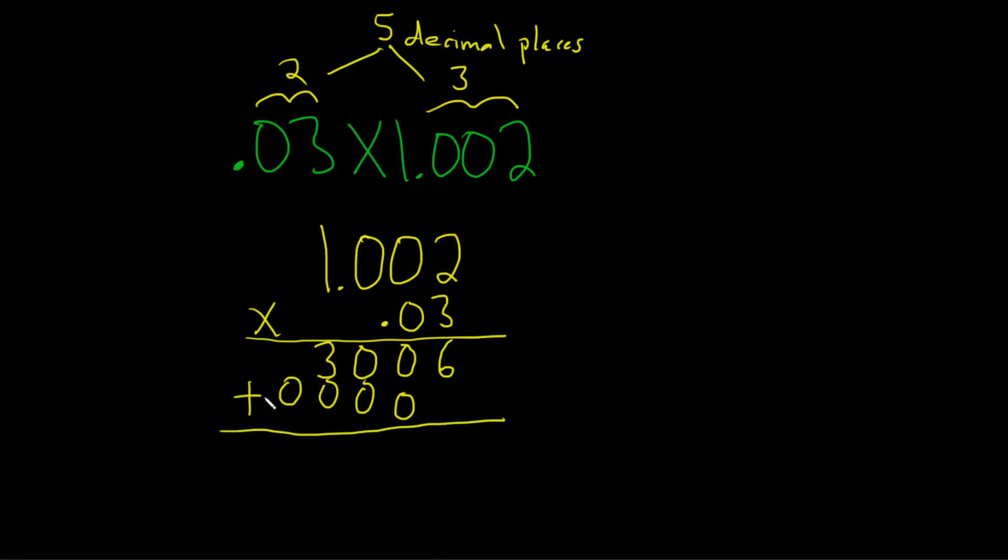Then you put a plus sign. You can put it into 0 if you want. 6 plus 0 is 6. 0, 0, 3, 0.